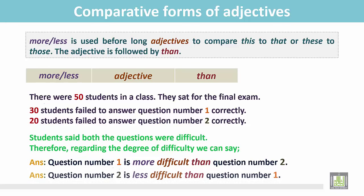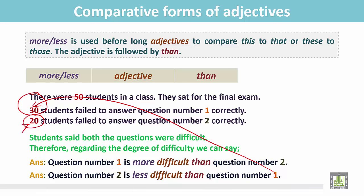The other way we can say is that question number 2 is less difficult than question number 1. Why? Because only 20 students failed to answer question number 2, but 30 students couldn't answer question number 1 correctly. So we can use more or less before long adjectives.